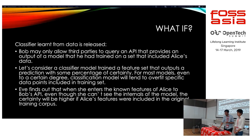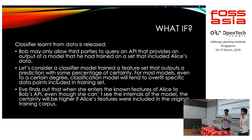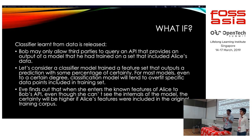The third way is releasing only the classifier learned from the data — perhaps the most conservative of the three. Bob may only allow third parties to query an API that provides the output of a model he trained on the data. But even this turns out to be insufficient. All three ways of sharing data are not really very private and still have the potential to expose Alice's data.